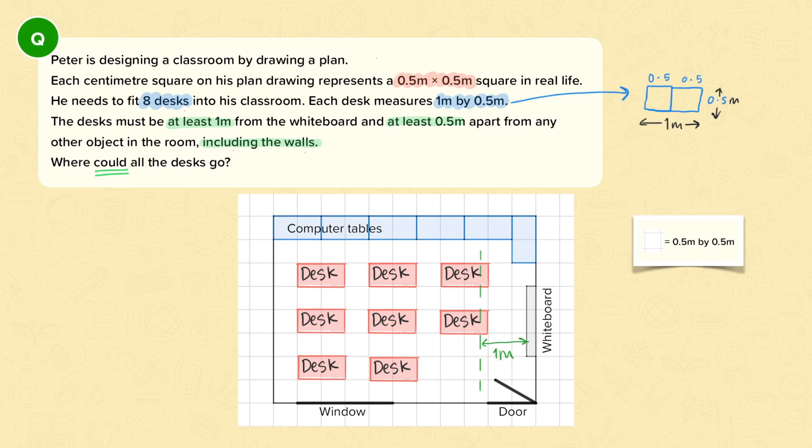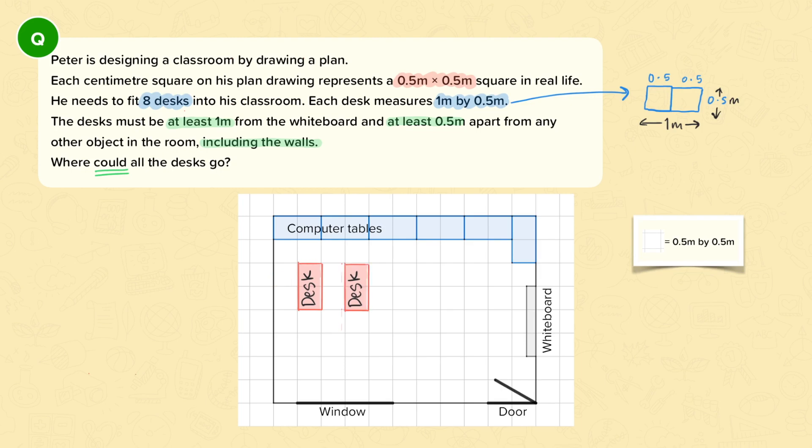So what I can do is I can try and turn the desks the other way and see if I can fit more in the room like that. So I know that this desk is at least 0.5 meters away from the walls and the computer tables. So I can just start filling in the rest of the eight desks.